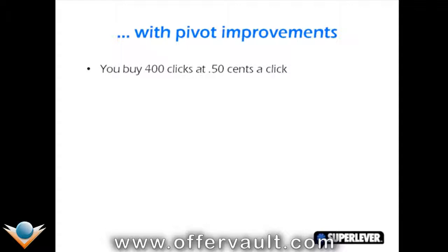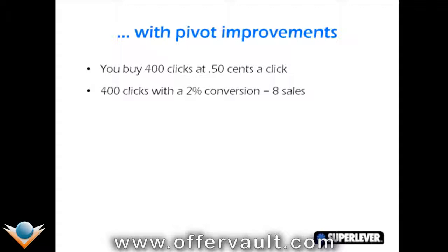But when we go to work on making a few small improvements, look at what happens. If we double the amount of clicks without paying any more — we can do that by making our ads more relevant — and then make just a small improvement in conversion, moving from 1% to 2%, all of a sudden we're up to eight sales. The bottom line profitability of the operation is certainly looking a lot more healthy.